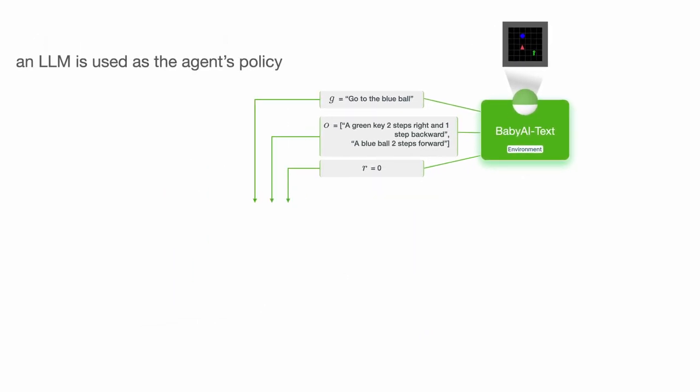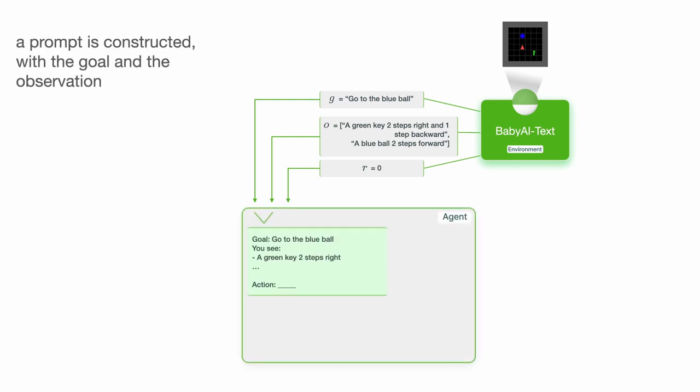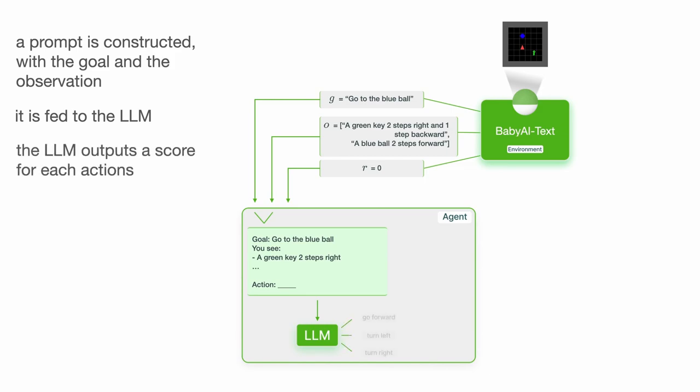In our work, we use an LLM to act as the agent's policy. It takes as input a textual description of both the goal and the observation given by the environment and scores the possible actions. The agent then selects an action according to the LLM output and receives the reward.